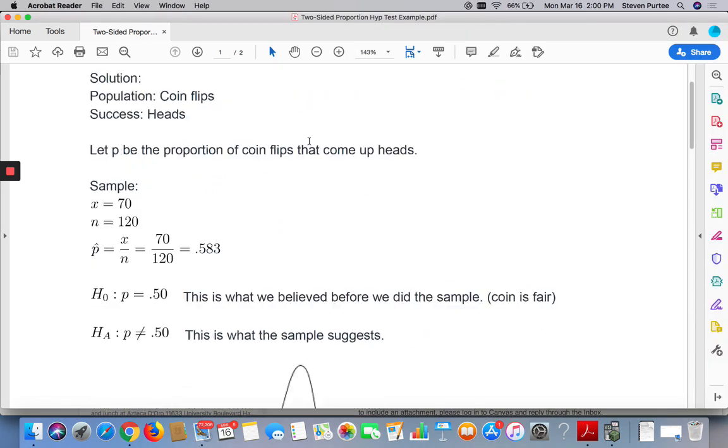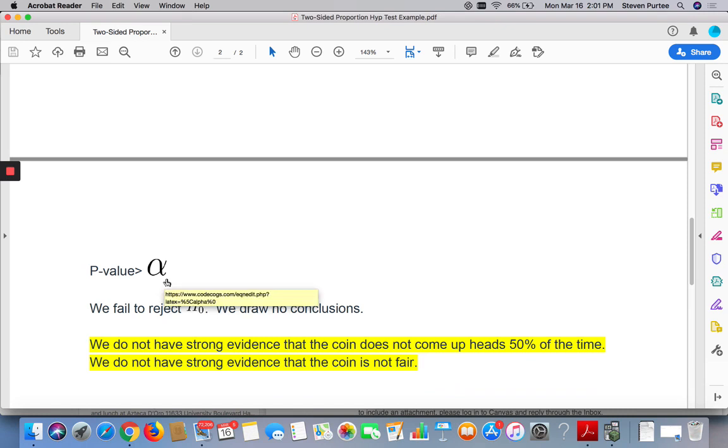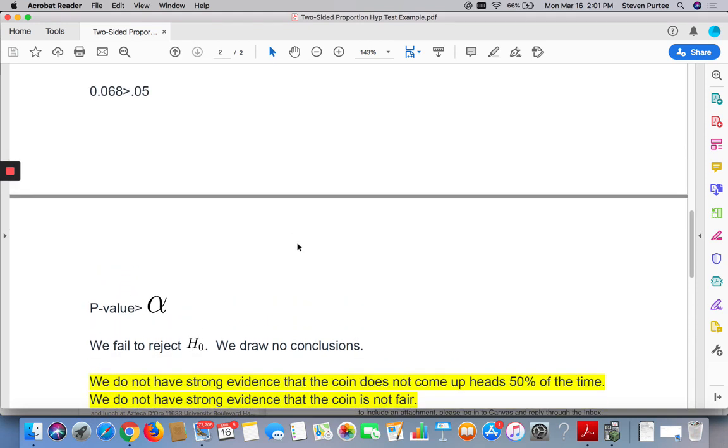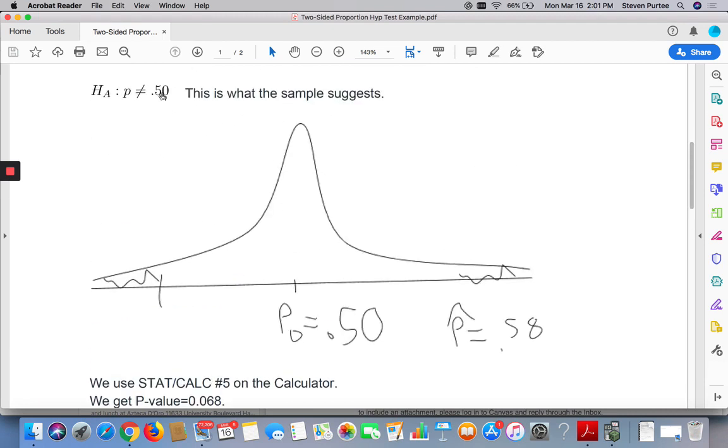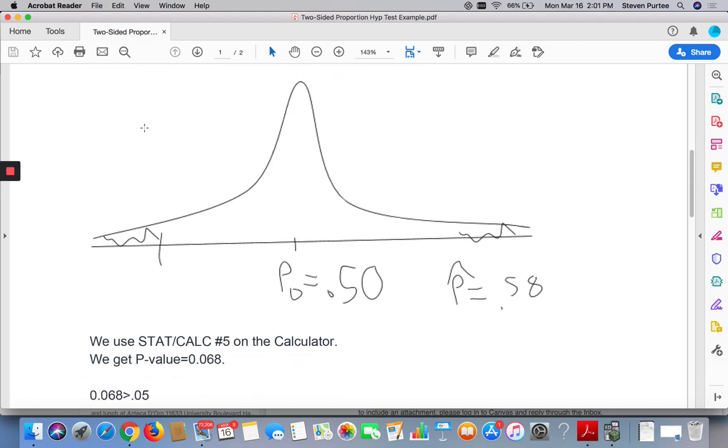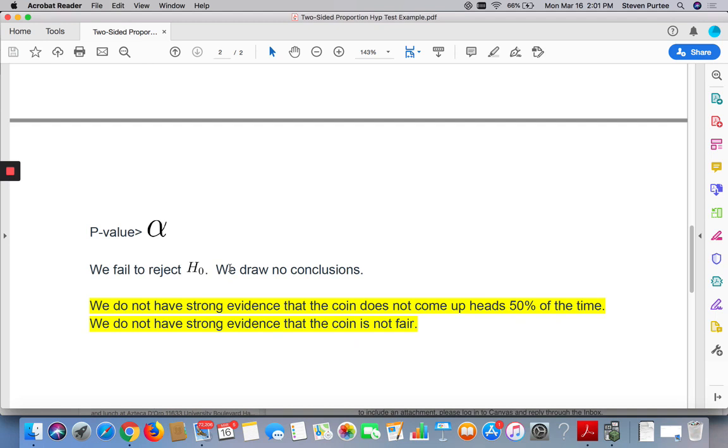Our alpha level was 5%. Our p-value was almost 7%. That's bigger. If the p-value is bigger than alpha, we fail to reject the null. And we draw no conclusions. So don't get the wrong idea here. We're not writing fail to reject because of this. We're writing fail to reject because our p-value was bigger than alpha. So we fail to reject the null. We don't accept anything. We draw no conclusions at all.